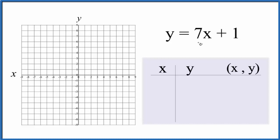So let's put some values in for x. You can use any values but it's nice to start with things that you think will fit on your graph paper. Let's go with 0, that's always a good one. 7 times 0 is 0, so 0 plus 1 is just 1.